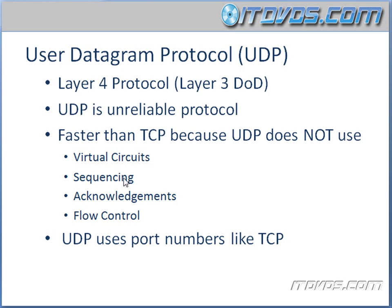But imagine if you're watching a TV program and it was getting bogged down because of acknowledgments and it was very slow. Just because it lost a few segments, they had to be retransmitted, and it was just constantly choppy. Well, that's worse than just losing a couple of segments with UDP.